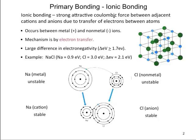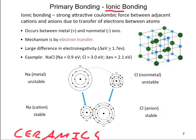The second type of primary bonding is ionic bonding. Ionic bonds are generally the strongest type of bond, and occur in some ceramics. In ionic bonding, one atom transfers electrons to another atom, creating two oppositely charged ions. The attraction between the positive and negative ions is what holds the material together.